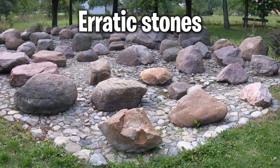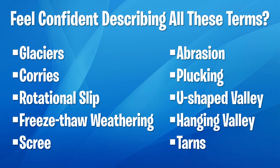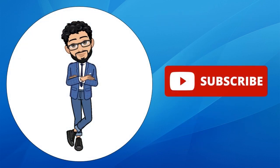The rocks that survive the trip from the mountain to the end of the valley are called erratic stones. And that is the first introduction lesson to glaciers. Do you feel confident describing these terms? Do you know what a glacier is? Can you identify a corrie? What's rotational slip? What's the mechanism of freeze-thaw weathering? What is scree? What does abrasion look like? What's plucking? What causes a U-shaped valley? What causes a hanging valley? And what characterizes a tarn? If you know the answer to all of these, you've absorbed the lesson — well done. Please consider supporting the channel by clicking the subscribe button and liking and leaving a comment. See you in the next lesson.